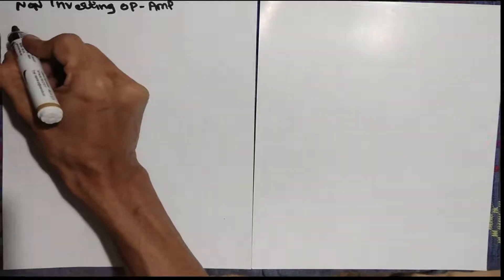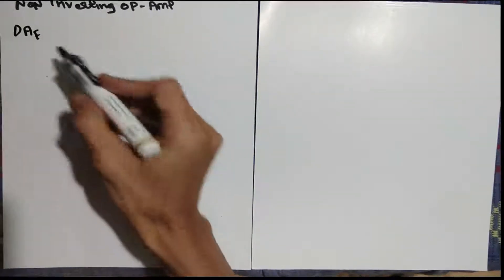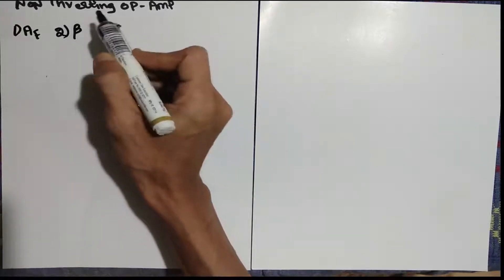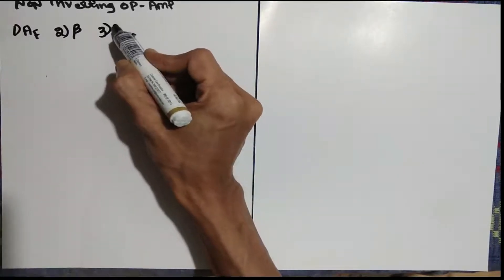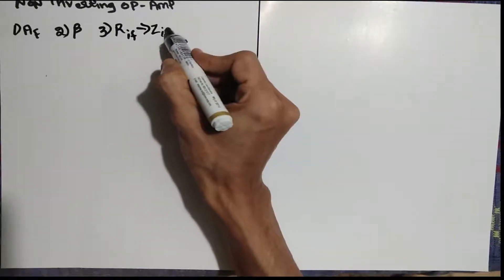Hi everyone. Now we will discuss about some of the types of op-amps. Usually op-amps have non-inverting and inverting amplifier configurations. For each inverting or non-inverting amplifier, you have to define what the total gain is — we call that AF. Next, we can identify what is the feedback, which we call beta, and also identify the resistor with feedback, which we call RIF or, if using AC signals, ZIF.